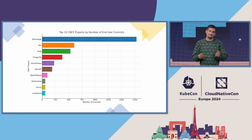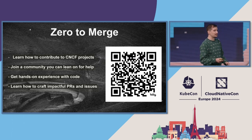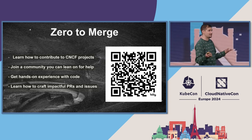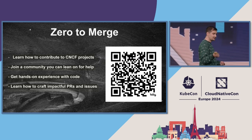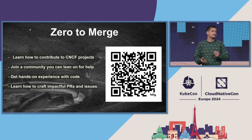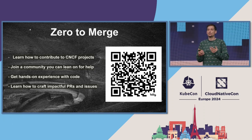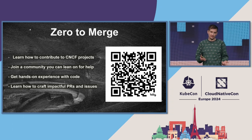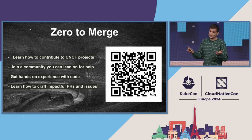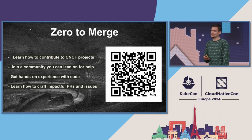Making your first contribution can be a little bit jarring. You might be a little bit nervous doing that. You might not know where to go or how to do it. For that, we've started a program called Zero to Merge that some of you might have heard about. Zero to Merge shows you how to contribute to projects, join the community, interact with contributors and maintainers, and understand what it takes to open up pull requests and issues. Let's face it — we all have issues, it's just nice when we can put them in GitHub and actually talk about what's going on.